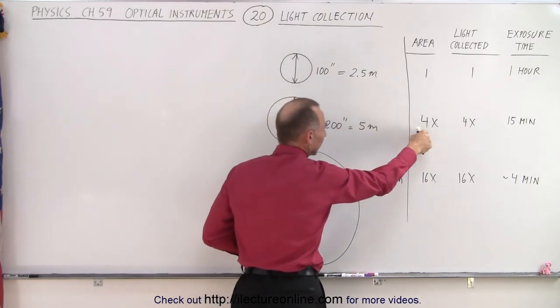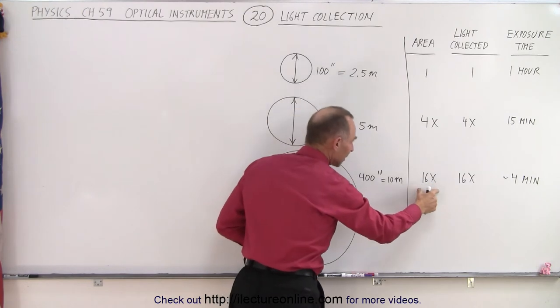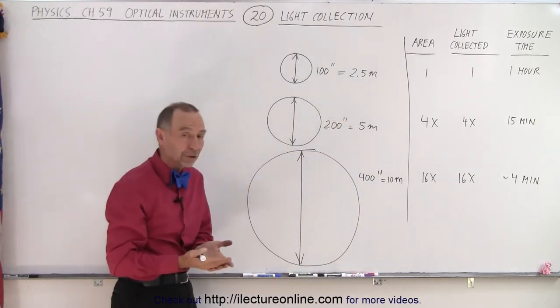Then if you double the diameter, you have four times the area. And if you quadruple the diameter, you have 16 times the collecting area to collect light.